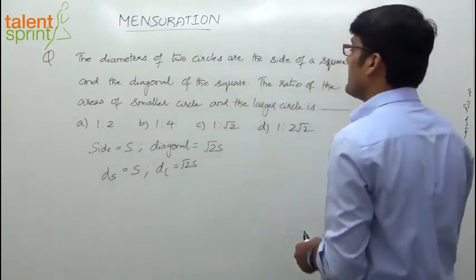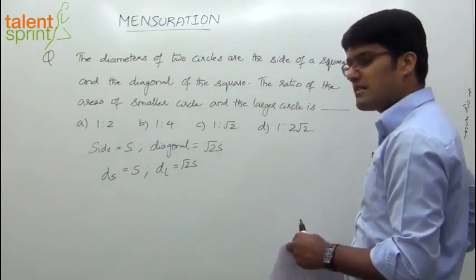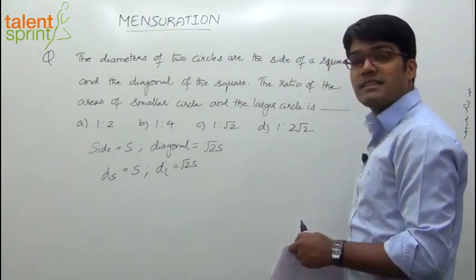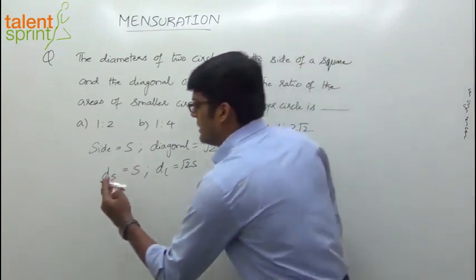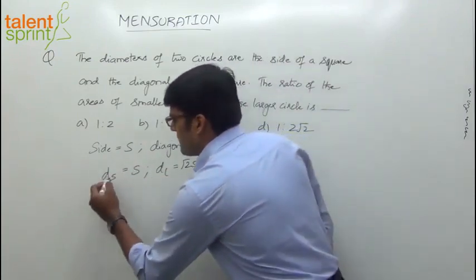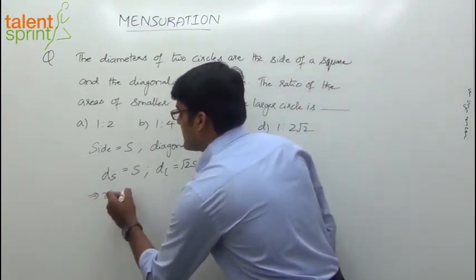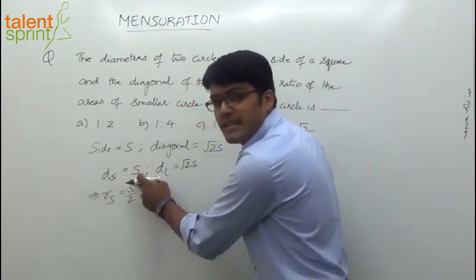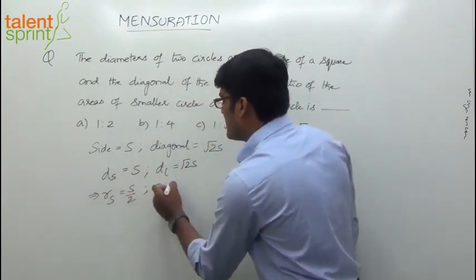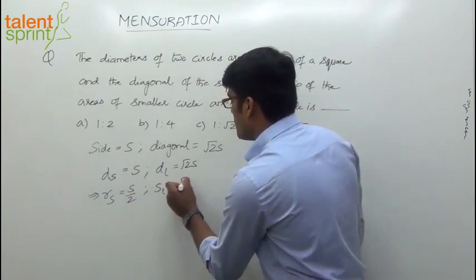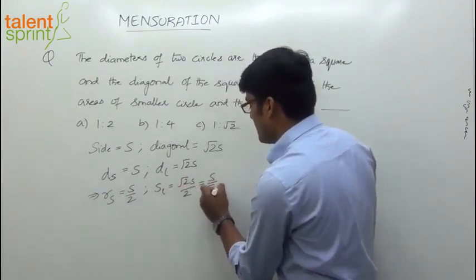What do we have to check here? The ratio of areas of the smaller circle to the larger circle. You know that the area of a circle is pi r squared. So from this, let us calculate the radius. The radius of the smaller circle is S by 2 — if the diameter is S, the radius is half of it. The radius of the larger circle is root 2S by 2, which is actually S by root 2.